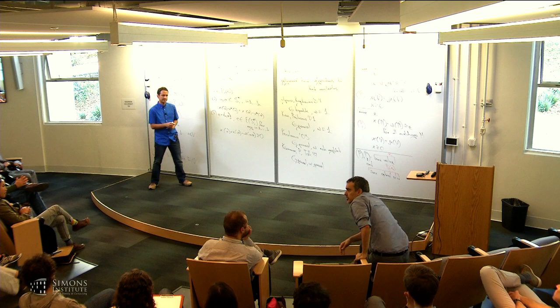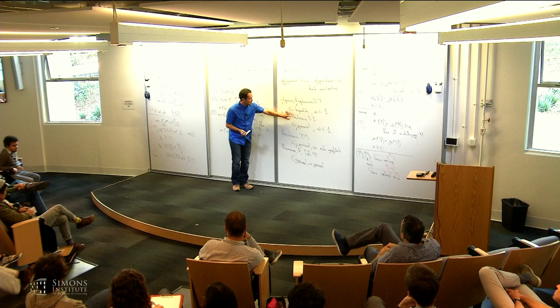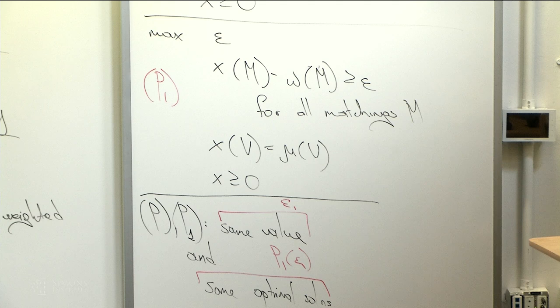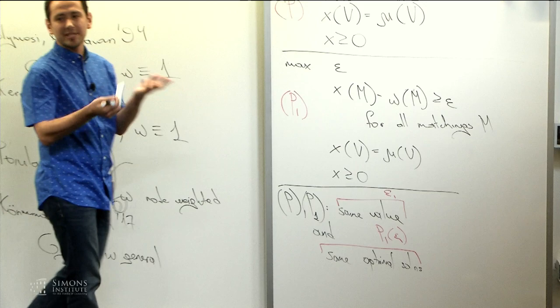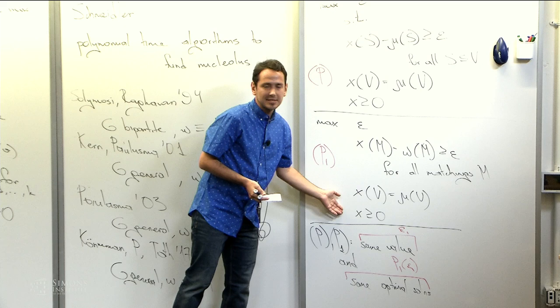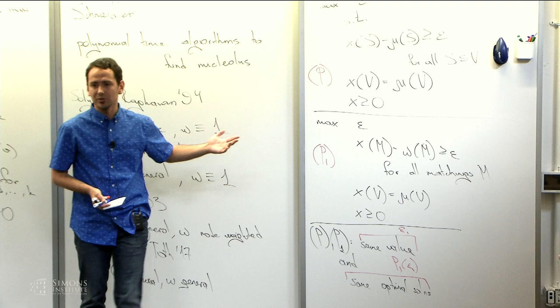Q: What about the other algorithms — are they also using LP-type methods or combinatorial methods? A: They use LP-type methods too. They arrive at the same point, but for the node-weighted case they take Edmond's Galai decomposition, which they can compute, and work with that. Unfortunately, for general weights, Edmond's Galai decomposition doesn't help — it wouldn't bring us anywhere. That's why our approach via the relative interior and laminar families is needed.